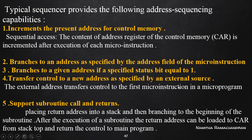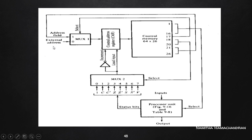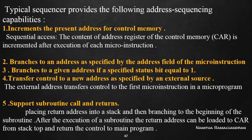The sequencer can also transfer control to a new address as specified by an external source. We can transfer an address specified by an external source to the control address register. This is the case of starting the execution of a new program — whenever we want to start the execution of a new program, we specify the starting address from an external address source.